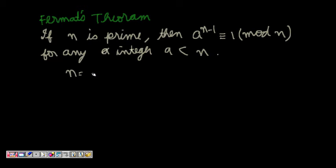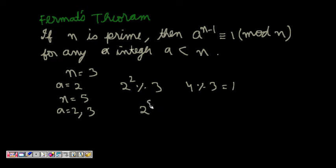let's say n is equal to 3. A very small example just to test it and a is equal to 2. So 2 to the power of now 2, if we divide it by percentage 3, so this is 4 percentage 3 and it is equal to 1. Let's take a bigger example, n is equal to 5, then we can take a is equal to 2 and 3.